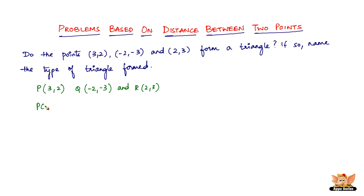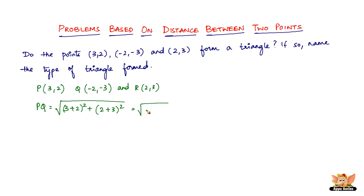Let's first find PQ. PQ is the square root of (3 minus (-2))² plus (2 minus (-3))², which gives us square root of 5² plus 5², which is equal to square root of 50, approximately equal to 7.07.